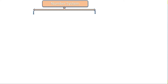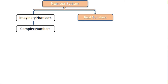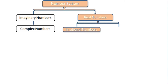Firstly, the number system is divided into two groups: imaginary numbers and real numbers. Imaginary numbers are again grouped into complex numbers. And the real numbers are again categorized into two different groups: irrational numbers and rational numbers.